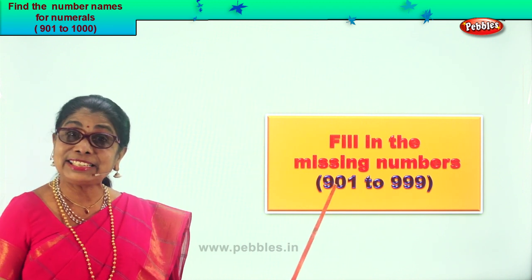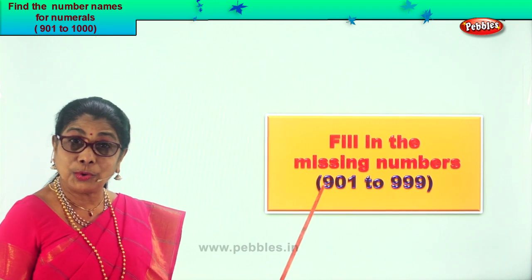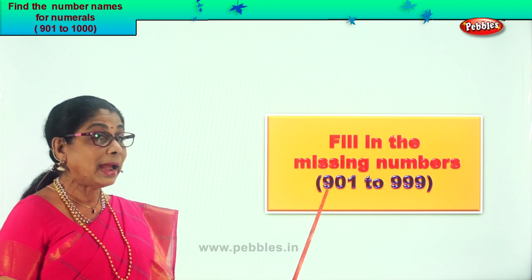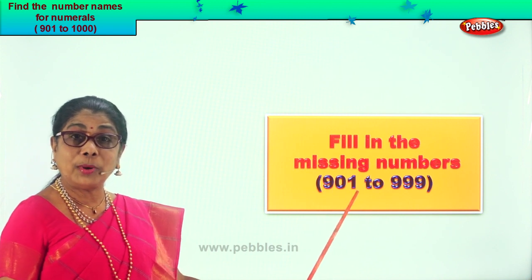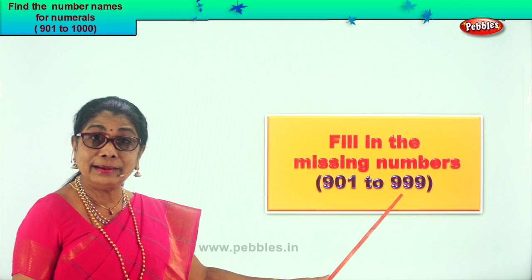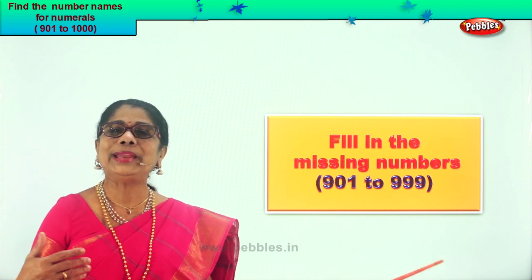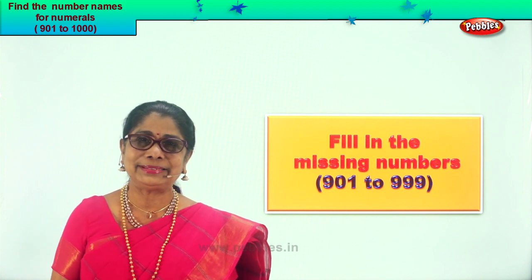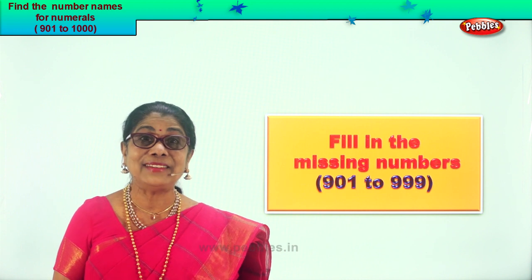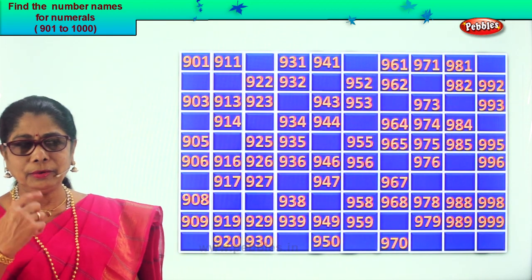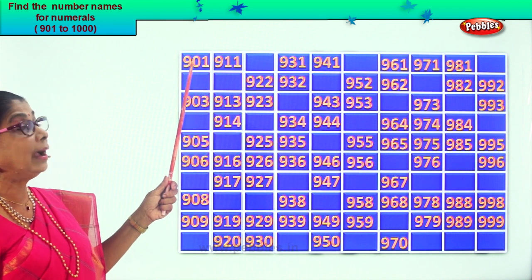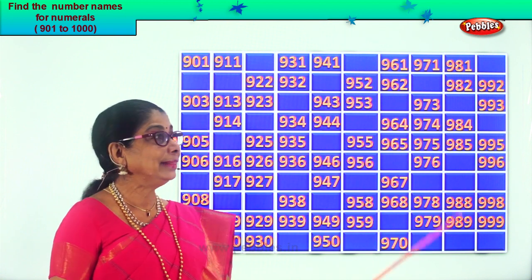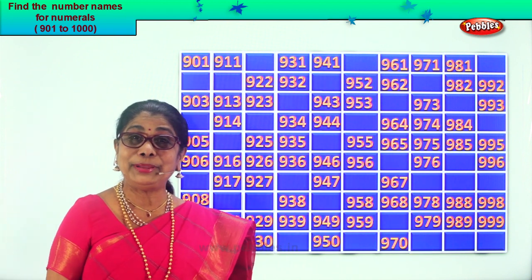Hi children, let's learn to count and fill in the missing numbers from 901 to 999. We are going to read, say aloud, and also fill in the missing numbers. It's very easy, very interesting. Let's do it together. Look at this — you have numbers from 901 and the last number is 999, and there are a lot of empty places you're going to help me to fill in.